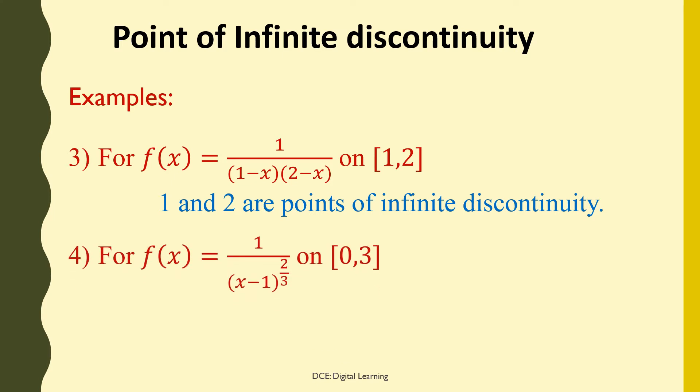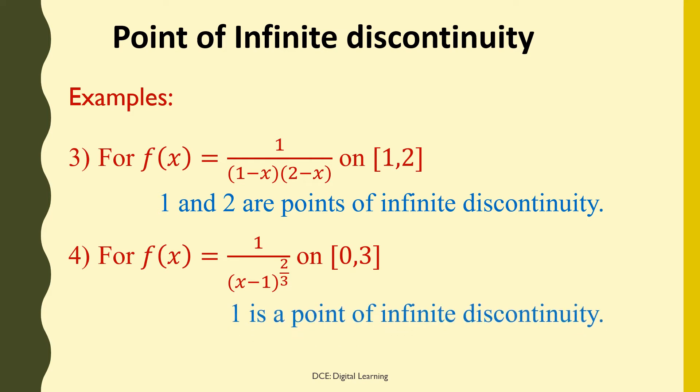Fourth example: f(x) = 1/(x − 1)^(2/3) on the closed interval [0, 3]. Clearly, this function is not defined when x = 1. Therefore, 1 is a point of infinite discontinuity for this function. Here, 1 is one of the interior points of the interval.